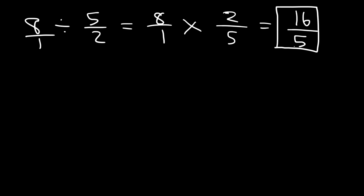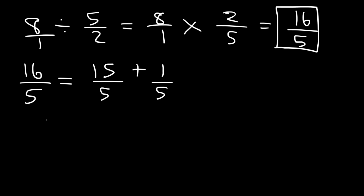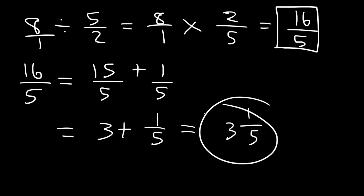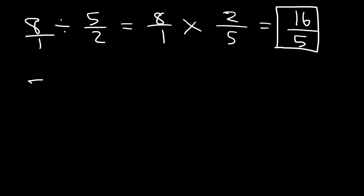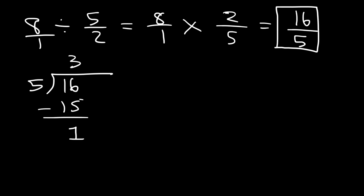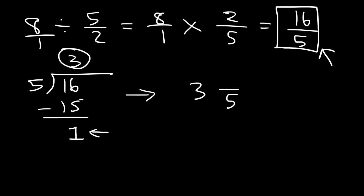Sometimes you may need to convert the improper fraction into a mixed number. Here's one way: 16 is basically 15 plus 1. Divide each number by 5 — 15 divided by 5 is 3 — so we have 3 plus 1 fifth, which as a mixed number is 3 and 1 fifth. The other way is long division: put 5 on the outside and 16 on the inside. 5 goes into 16 three times; 5 times 3 is 15 with a remainder of 1. The quotient 3 is the whole number, the denominator stays 5, and the remainder 1 goes in the numerator — giving 3 and 1 fifth.